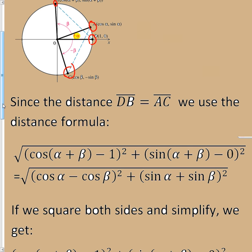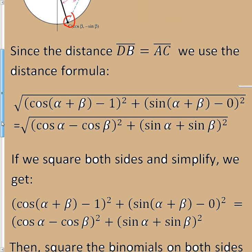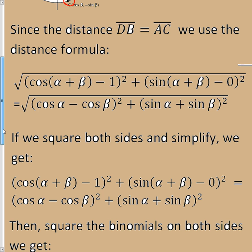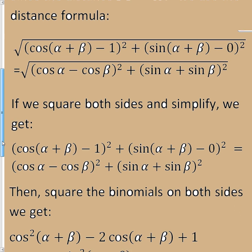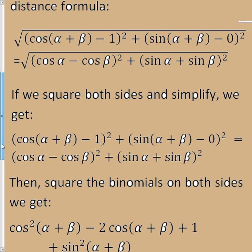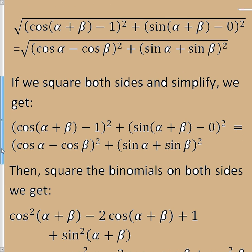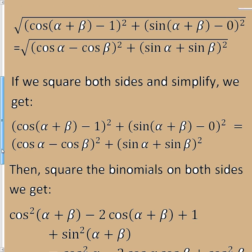Now, if we square both sides, the square root goes away. Then, when we square the binomials, multiply out the cosine of alpha plus beta minus 1 squared—that's going to be a perfect square trinomial. So it's cosine squared of alpha plus beta minus 2 cosine of alpha plus beta plus 1. And because this is zero, when I square it, I'm just going to get sine squared of alpha plus beta.